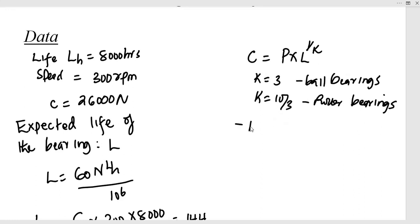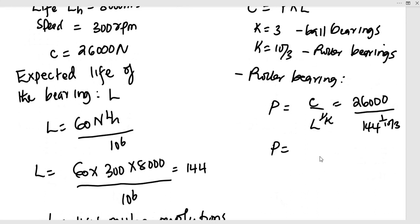So since it is a roller bearing, then P is going to be C divided by L power 1 out of K. So this is going to be 26,000 divided by 144 power 1 out of 10 out of 3. This is 26,000 divided by 144 power 3 out of 10.